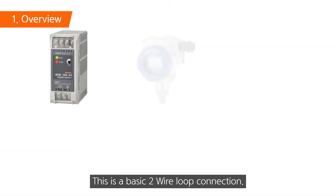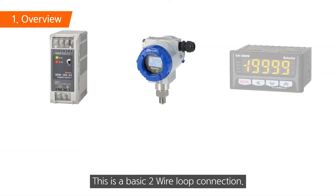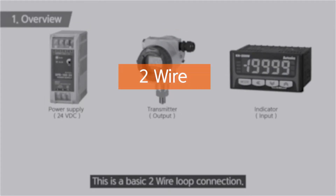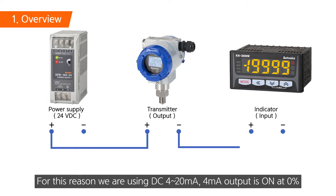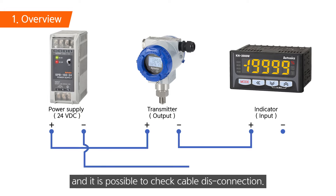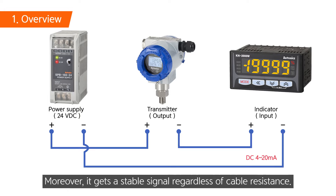This is a basic two-wire loop connection. For this reason we are using DC 4 to 20 milliampere. 4 milliampere output is on at 0%, and it is possible to check cable disconnection. Moreover, it gets a stable signal regardless of cable resistance.